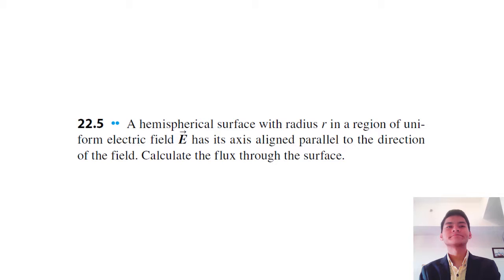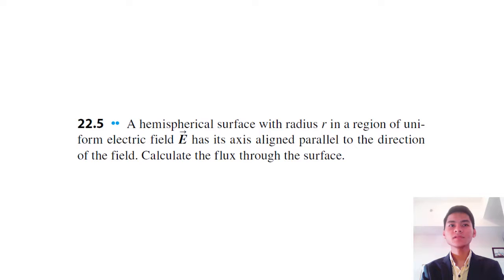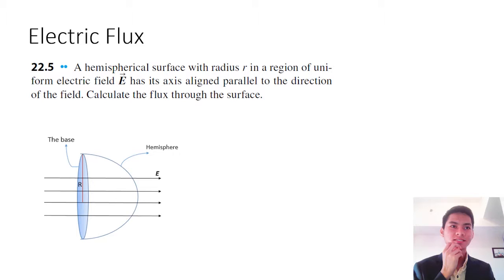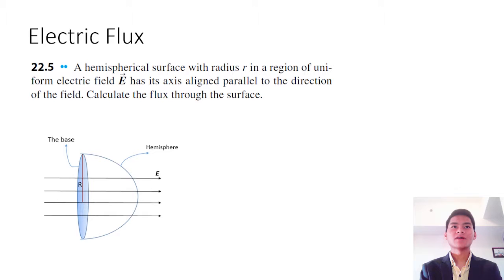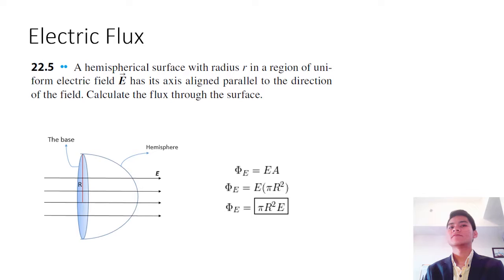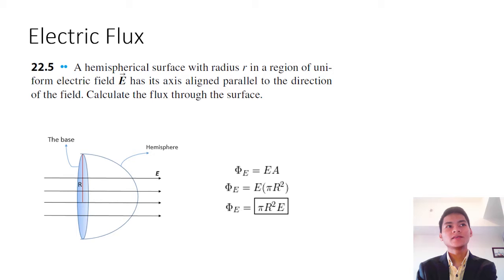Moving on to our last problem: a hemispherical surface with radius r in a region of a uniform electric field E has its axis aligned parallel to the direction of the field. Calculate the flux through the surface. By Gauss's Law, the flux through the basis equals the flux through the hemisphere, and we get a straightforward answer: flux equals E times pi r squared. That concludes this video. The next video will be on electric potential. Thank you.